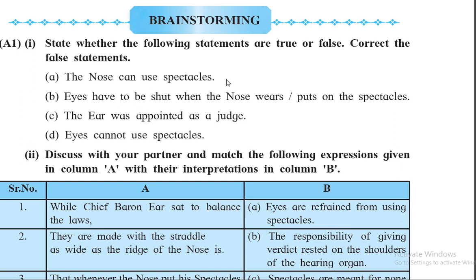The spectacle uses the nose. The spectacles are of no use to the nose. When the person's eyesight is weak and he puts on his spectacles, he can see more clearly — so it is helpful for the eyesight, not for the nose. So the statement is wrong. The nose cannot use the spectacle; rather the spectacle uses the nose to fit on the face of the person.